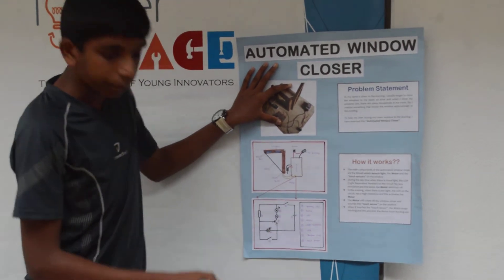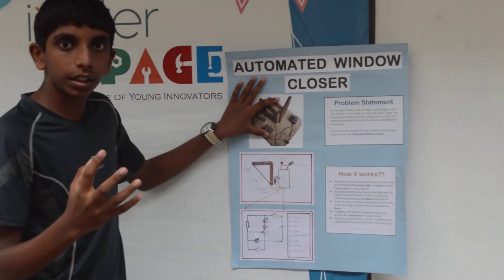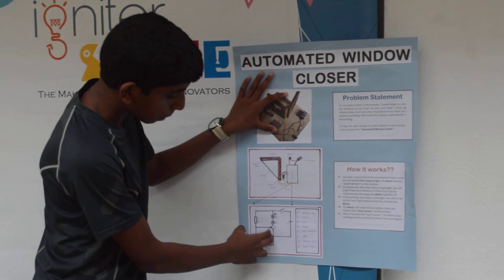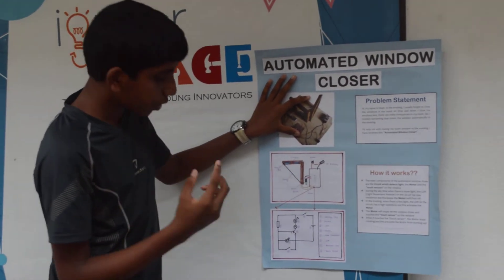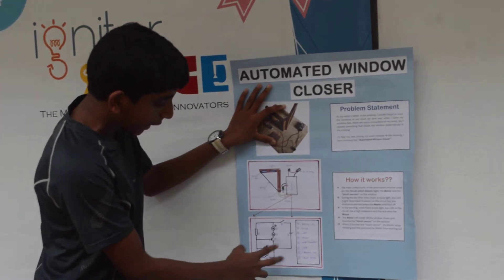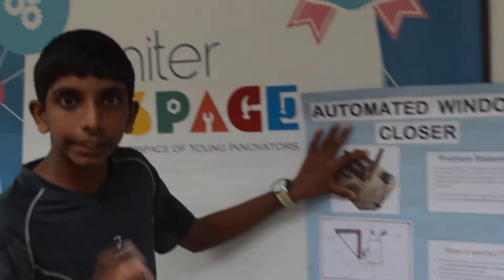But in day-time, the LDR detects the light and there is an equal voltage difference. So the circuit is incomplete.